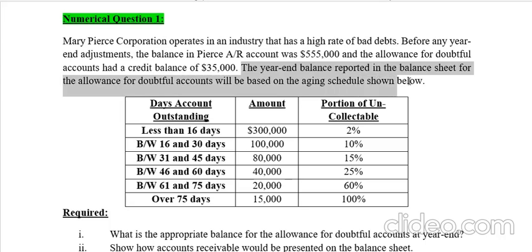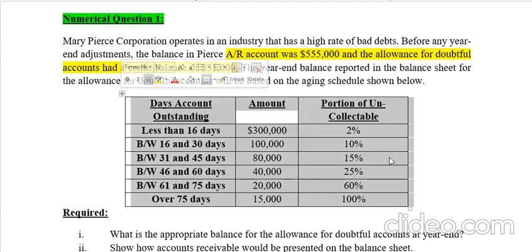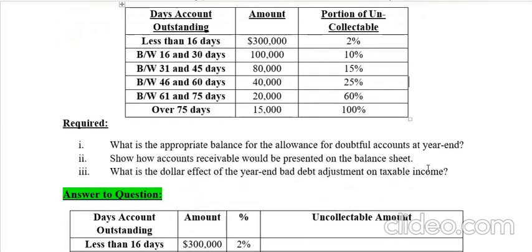The year-end balance reported in the balance sheet for the allowance for doubtful accounts will be based on the aging schedule shown to us. At the start of the year, accounts receivable is $55,000 minus allowance for doubtful accounts of $35,000, giving us the net realizable value. With updates to the accounting records, a fresh allowance for doubtful accounts will be calculated based on the given table. We are required to answer three questions.